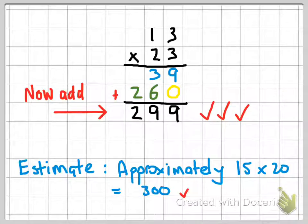And if we use our estimation, well I've rounded 13 up to 15 and I've taken a bit of liberty and made 23 close to 20. So 15 times 20 is 300, so we're bang on. So well done everyone.